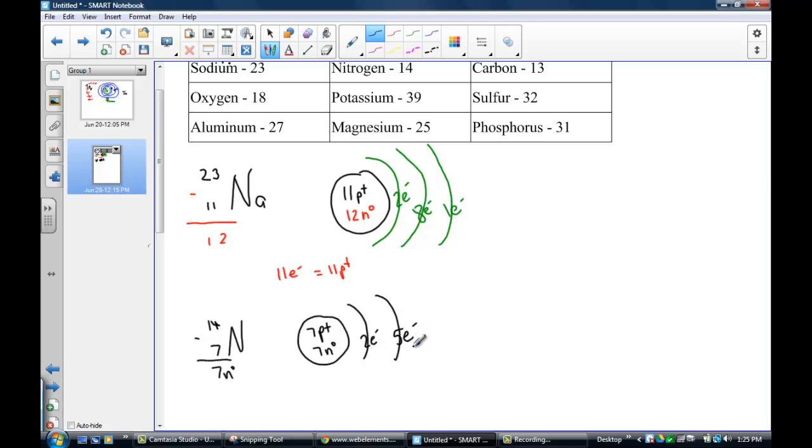These seven electrons, arranged outside the nucleus of nitrogen, would have two and then five in terms of their shell.